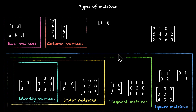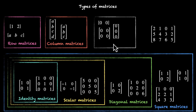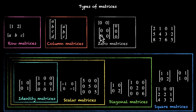There's one more type. If you have all the elements as zero, you call these matrices zero matrices. You can have any number of rows or columns, but if all the elements are zero, this is called a zero matrix, or sometimes also called the null matrix.